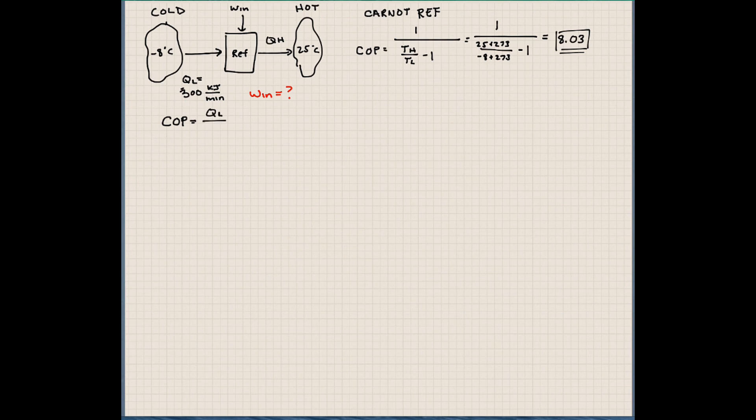And we'll take the ratio of the QL over W, or work in. We solved already for the coefficient of performance, which is 8.03. QL is given as 300 kJ per minute, and work in is what we're trying to solve for.